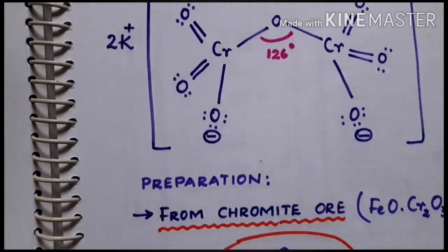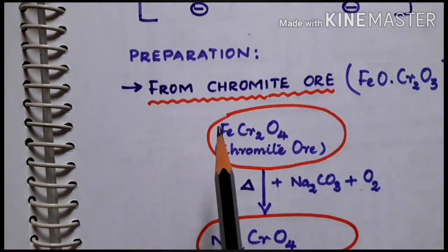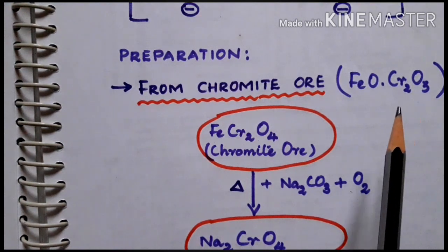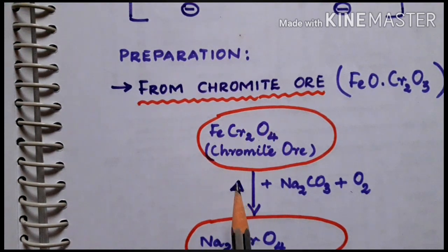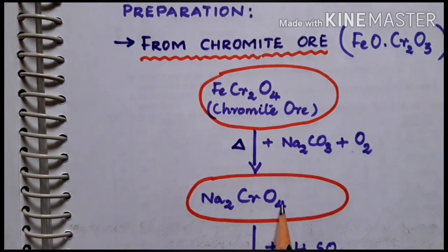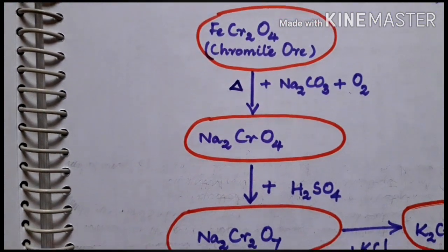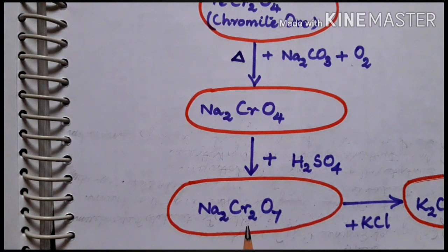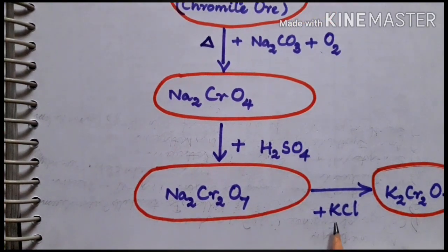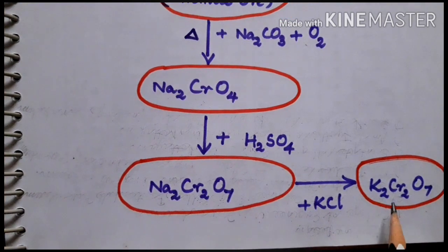Now the preparation of potassium dichromate. It is prepared from chromite ore, which is FeOCr2O3. Chromite ore on fusing with sodium carbonate solution in the presence of air gives sodium chromate. This yellow colored solution on acidification gives sodium dichromate. The sodium dichromate solution on filtering is treated with potassium chloride to form potassium dichromate.